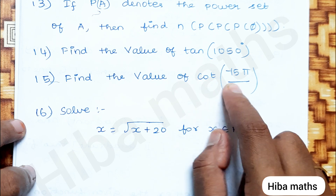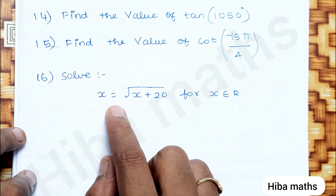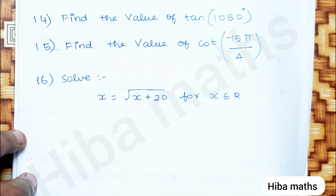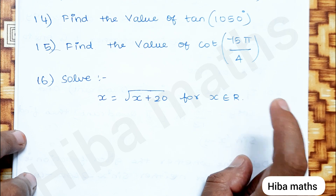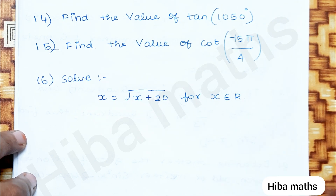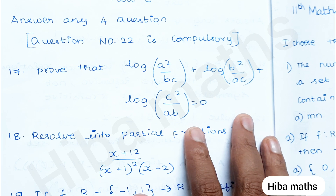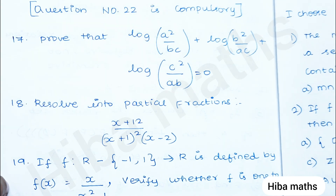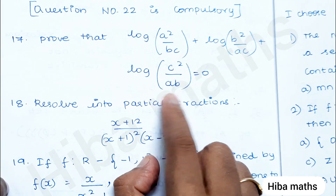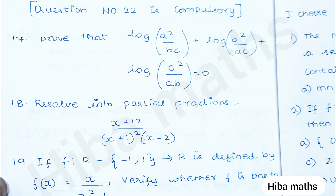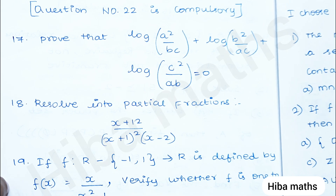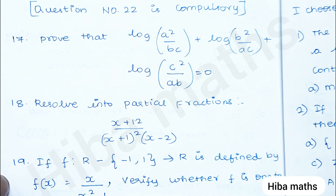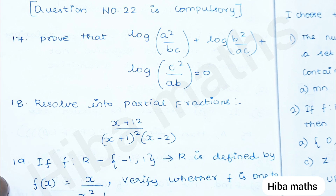Find the value of cot(−15π/4). Solve x = √(x + 20) for x ∈ ℝ. The 16th question is a compulsory question — it will skip. Part C: answer any 4 questions in 20 seconds. Prove that log(a²/bc) + log(b²/ac) + log(c²/ab) = 0. These are prove-type sums.